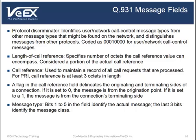In a Q931 message field, the protocol discriminator identifies the user network call control message types from other message types that might be found on the network. The length of call reference octets specifies how many octets the call reference value can encompass — it is used to maintain a record of all call requests that are processed. For PRI, the call reference is at least three octets long. A flag in the call reference field delineates the originating and terminating sides of a connection. A message from the origination point will have a flag set to zero; if set to one, the message is from the terminating side. Bits one through five in the message field identify the actual message, while the last three bits identify the message class.